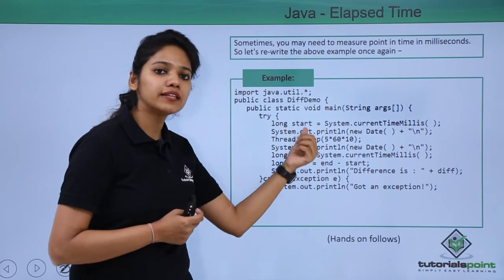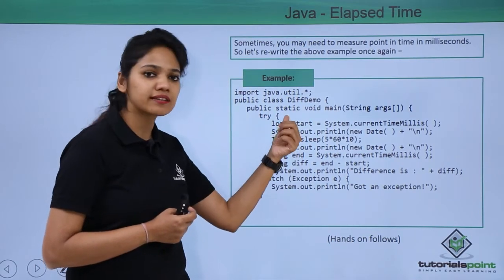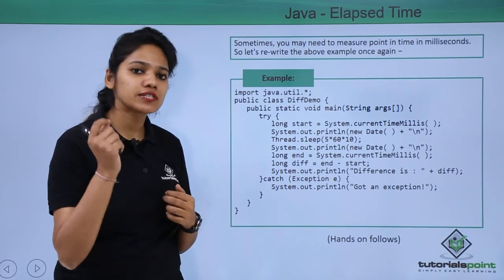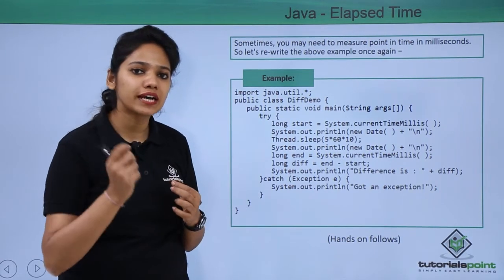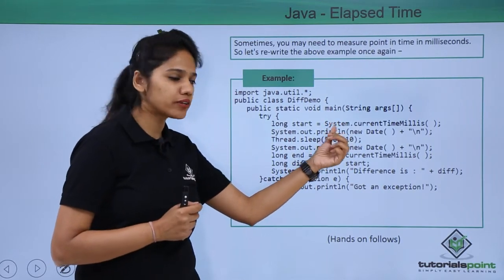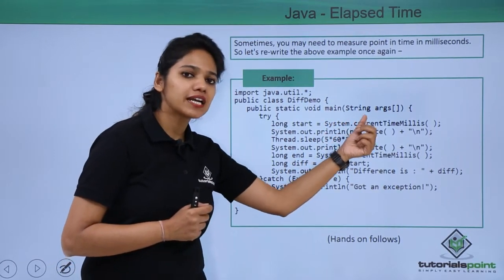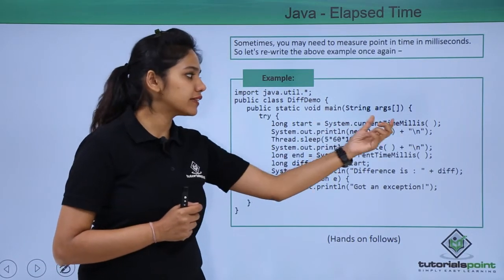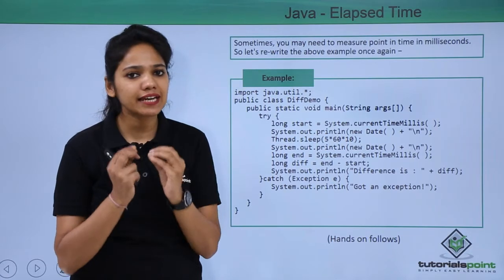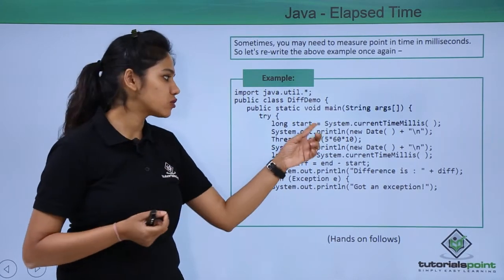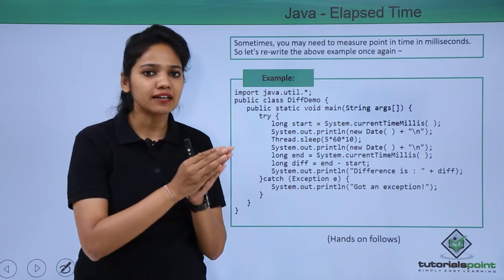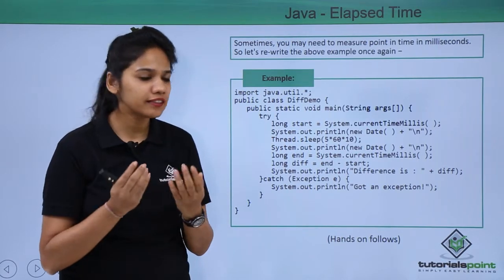So the data type is long and we provide the variable name 'start'. In this variable we are trying to store the current millisecond. From the system, you write system.currentTimeMillis — you are calling this method over the system to get the current time milliseconds and store it in this variable. Now you have the start time and you print the current date and time.